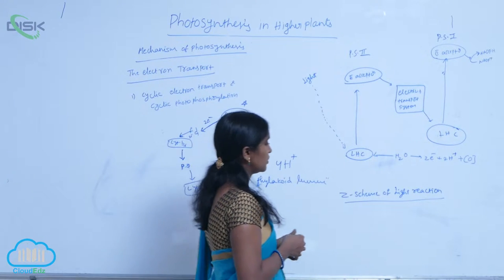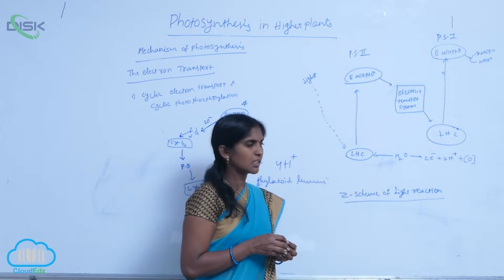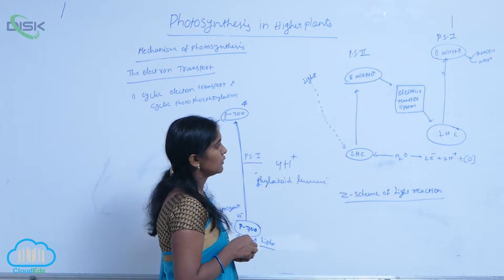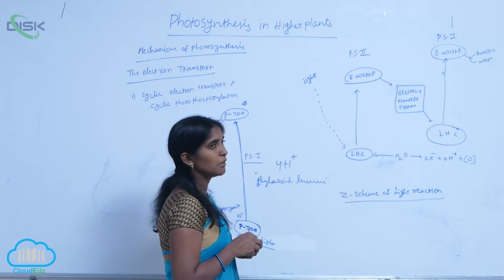Non-cyclic electron transport, also called the Z-scheme of the light phase. Here electrons are transmitted between two photosystems, PS1 and PS2.